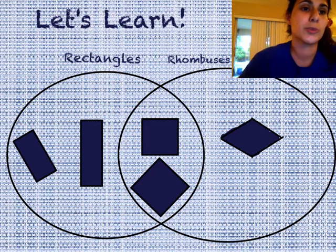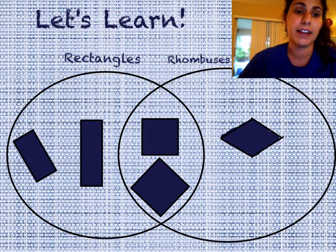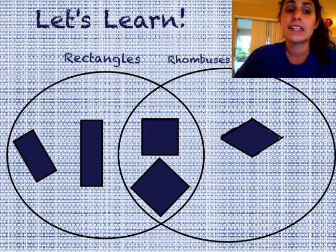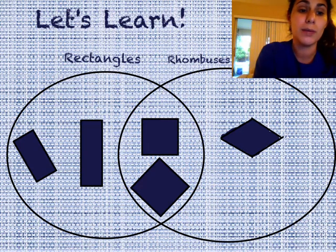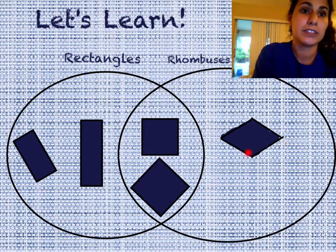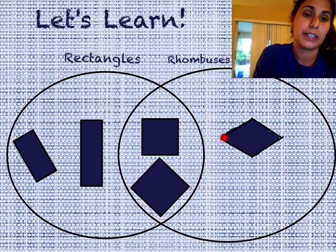So when we compared squares and rhombuses, we did find that squares and rhombuses can be the same if you say that the square is a rhombus. But the rhombus over here cannot be a square because it doesn't have those right angles.